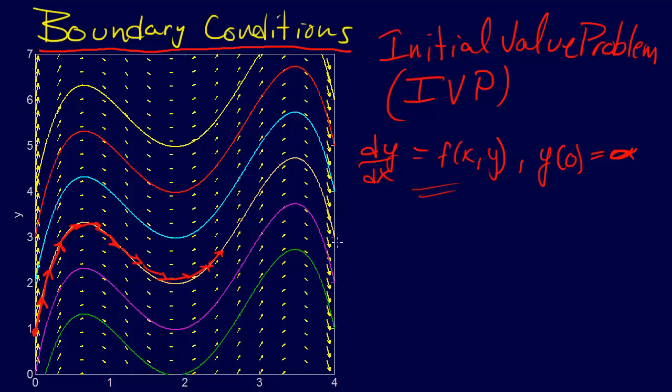For example, what if we were given, instead of y of 0, in this case it was y of 0 equals 1, what if instead of y of 0 equals 1 we were given y of 4, right, y at x equals 4, y of 4 is equal to, and in this case it was 3, okay, y of 4 equals 3. What if we had been given y of 4 equals 3? We start here and then we move, oh well, we can't move forward, what do we do?